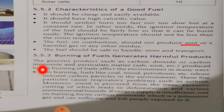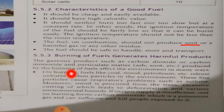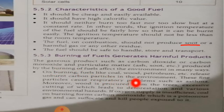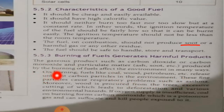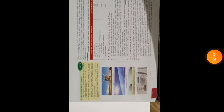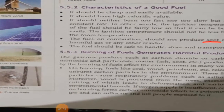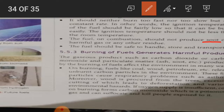Point number one: on burning, fuels like coal, wood, and petroleum release unburnt carbon particles into the environment. These fine particles cause respiratory problems such as asthma. Moreover, wood is procured from trees, and excessive cutting of trees leads to deforestation and various environmental hazards. If oxygen supply is insufficient, coal on burning forms carbon monoxide, which is a poisonous gas and can suffocate and kill people exposed to it.